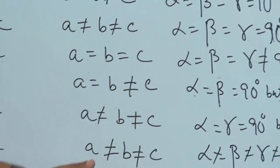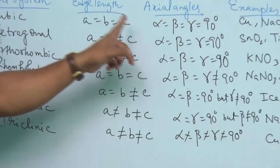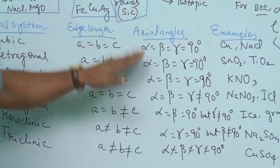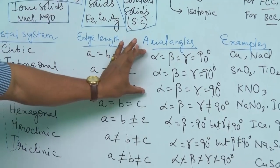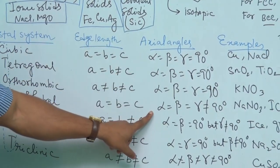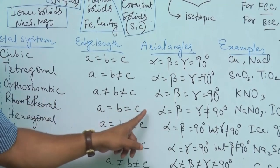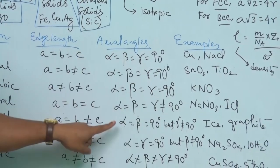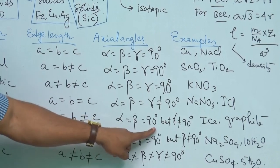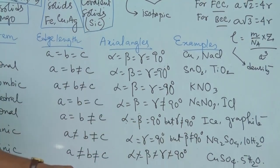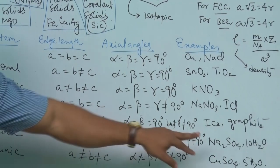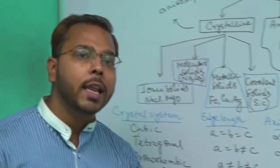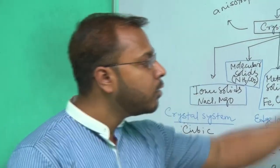For the axial angles: in the cubic system, α = β = γ = 90°. This holds for the first three systems. Starting from the rhombohedral system, α = β = γ but they are not equal to 90°. For the next (hexagonal), α = β = 90° but γ ≠ 90°. For monoclinic, α = γ = 90° but β ≠ 90°. And for triclinic, α, β, γ are all unequal and none equals 90°.